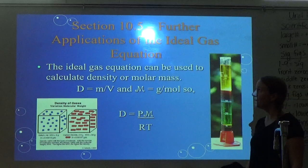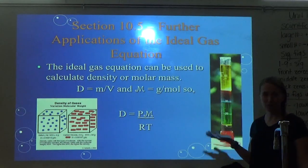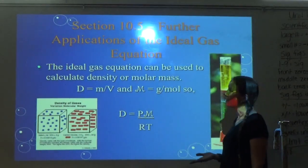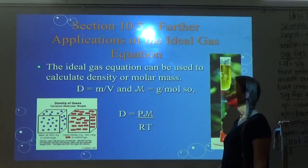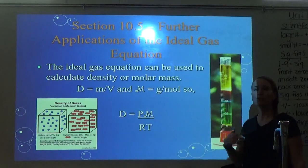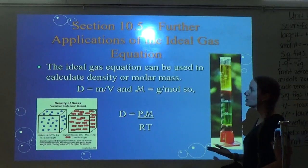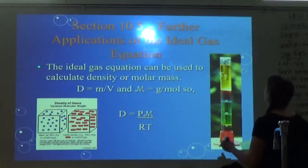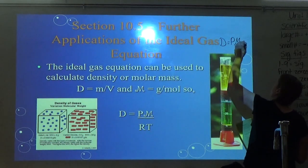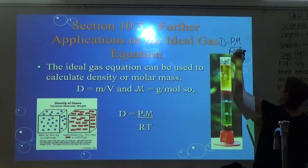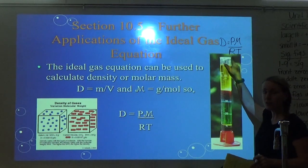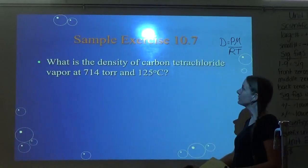Density is mass over volume, and molar mass is grams per mole. If you arrange the ideal gas equation using density and molar mass, you get: density equals pressure times molar mass, divided by R times T. That allows you to solve for density or molar mass.